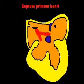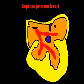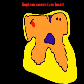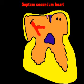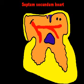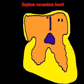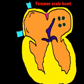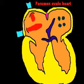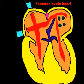The ostium primum is the opening between the left and the right atria. Later, a septum secundum is formed so that the septum primum joins the endocardial cushion, leading to the formation of a septum secundum, which later becomes converted into the foramen ovale.